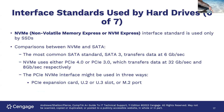NVMe — Non-Volatile Memory Express — is an interface standard used only by SSDs. Comparing NVMe and SATA: the most common SATA standard, SATA 3, transfers at 6 gigabytes per second. NVMe using PCIe 4.0 transfers data at 32 gigabytes per second, and PCIe 3.0 at 8 gigabytes per second — so PCIe 4 is much faster, over five times faster than SATA 3, and there's a four-fold increase between PCIe 3.0 and 4.0.